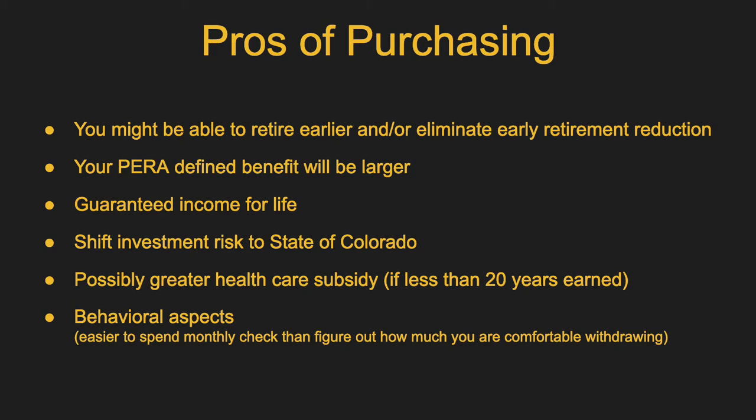For some folks, buying years can also get you a slightly greater health care subsidy in retirement. PERA offers PERACare, and it is partially subsidized. The subsidy maxes out at 20 years of service credit. So if you were retiring with 18 years of earned service and bought two more, that would increase your subsidy. Once you hit 20, the subsidy doesn't go up anymore, but it can be helpful for folks who have worked a relatively shorter career.